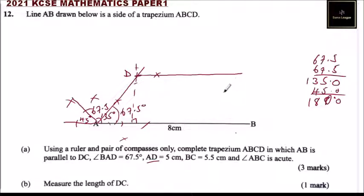From there, what you do is, we are told that BC is 5.5 cm, so you can make a point there, extend your compass, and you mark where you get 5.5 cm. And if you join these two points, then it means you have obtained the point C there. So this is where we have C.